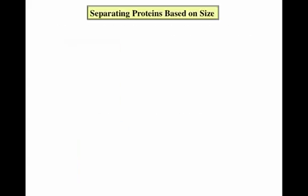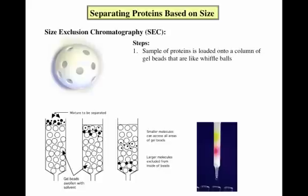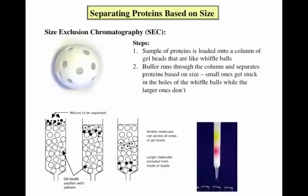Another way to separate proteins based on size is by a technique known as size exclusion chromatography. This method involves a size exclusion column containing resin beads that are like tiny wiffle balls. The sample of proteins is loaded onto the column, buffer is applied, and the proteins run through the column, with the larger ones traveling faster because they are excluded from the beads, and the smaller ones traveling more slowly because they have to go through all the beads. The sample separates as shown in the photo on the bottom right, and fractions are collected as they elute off the column and are analyzed for the presence of protein.